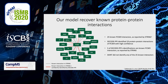Finally, we found that our model recovers some known interactions. 25 known interactors of the PCSK9 protein are present within our dataset, according to the STRING database. Decode PPI identified five of these known interactors, while SAINT did not identify any.